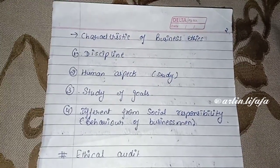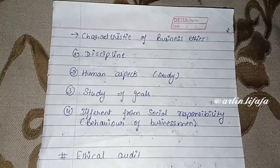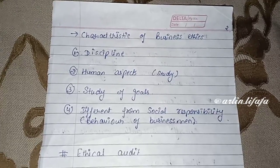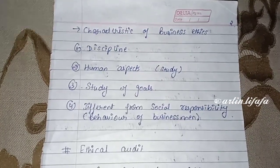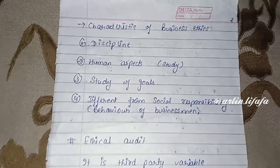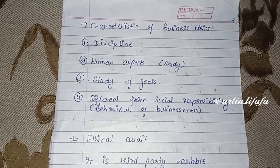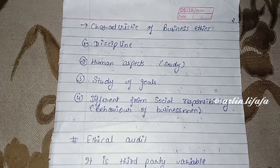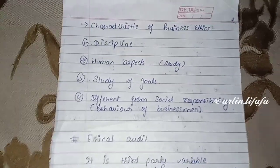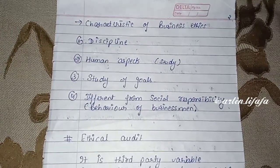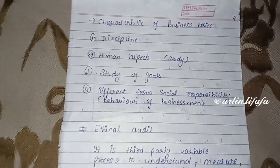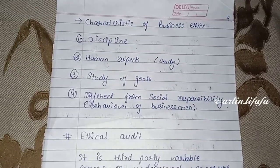Now let's come to the characteristics of business ethics. One characteristic is that ethics are applied to humans — whether we are giving goods to someone or receiving goods, both parties are human. Ethics apply to humans; we cannot apply them to animals.